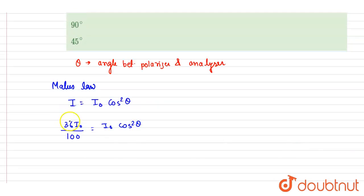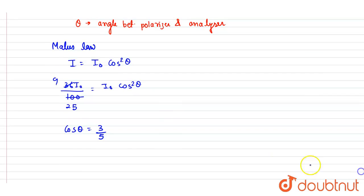So if you see here, this will be 9/25, and this I₀ will get cancelled out, so you will get cos θ equals 3/5, and theta will be 53 degrees.